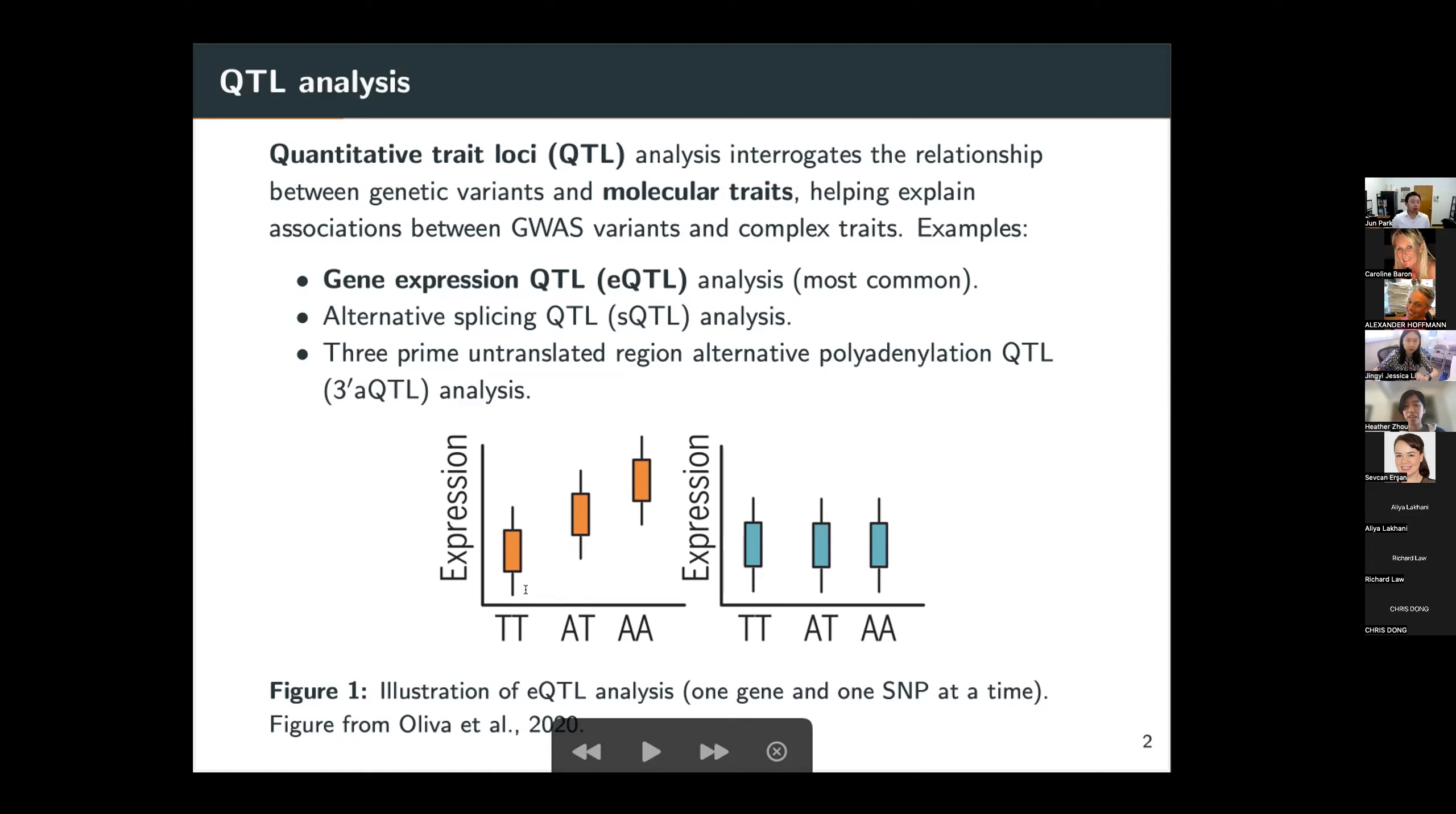between how many minor alleles this individual has and how high the expression level of the gene is. So in this case, we tend to believe that there is an association between the gene expression level and the genotype at the SNP location. On the other hand, on the right-hand side, there doesn't appear to be this kind of association. So this is what we try to look for in an EQTL analysis.